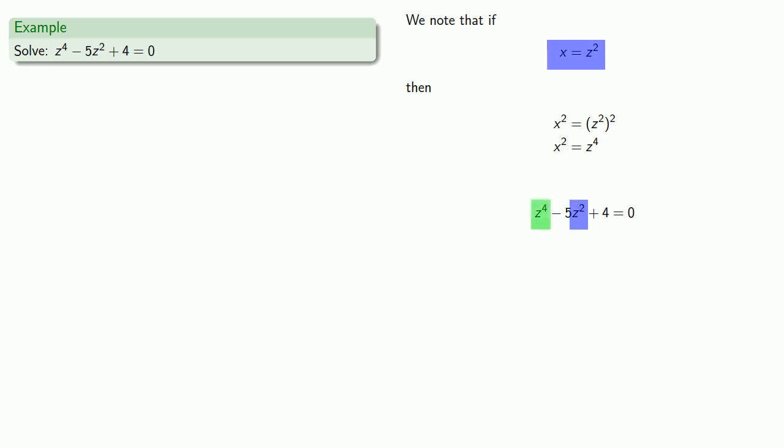And here, any place I see z to the fourth, I can replace it with x squared. So my equation, if I make these replacements, I get x squared minus 5x plus 4 equals 0.